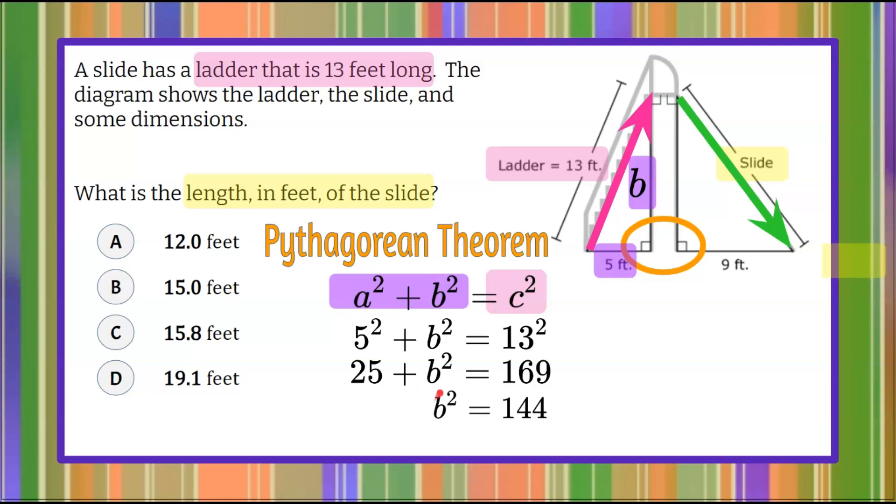To solve for b, this height, we square root each side. Square root of b squared is b. The square root of 144 is 12. So we know the height right here is 12.